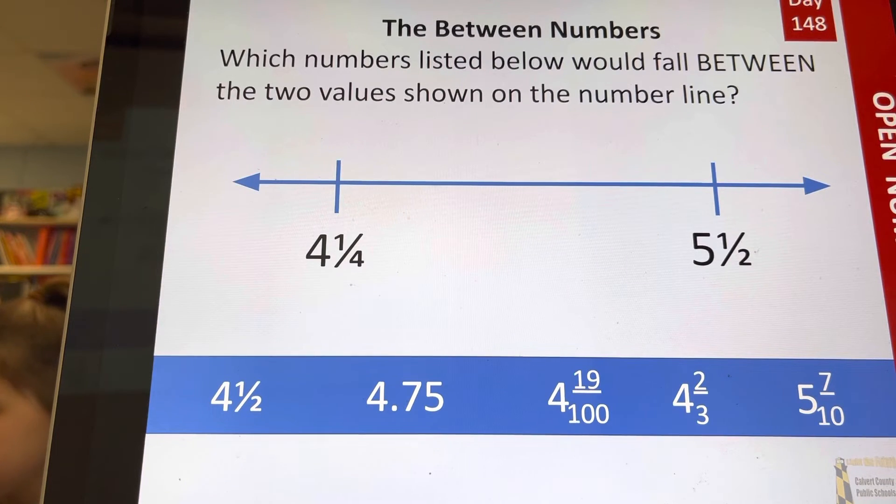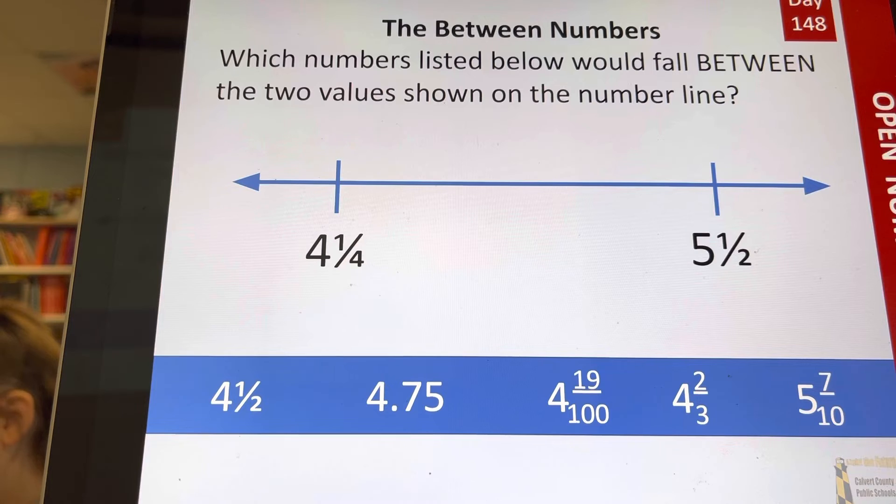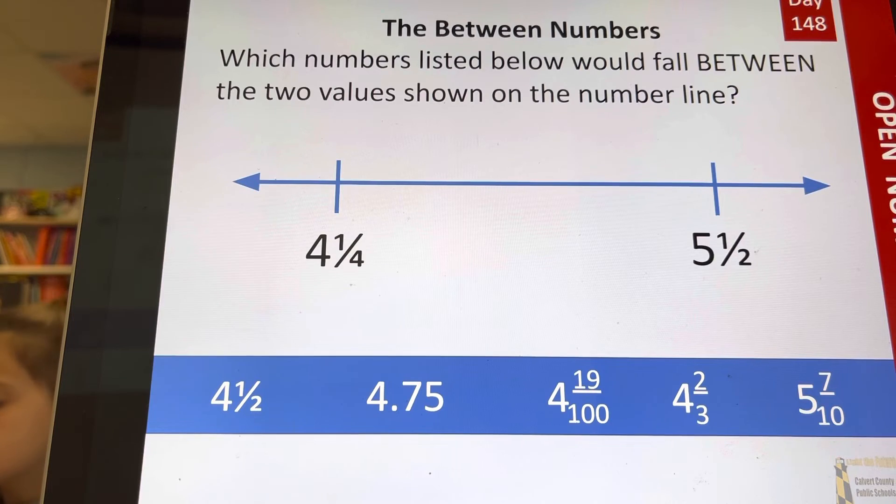Bella, what would five and a half be as a decimal number? How do you write a half as a decimal? [Student answers] Good, point five. So we're looking at between four point two five and five point five. Juliet, do you see another number besides four point seven five that would go between those two?